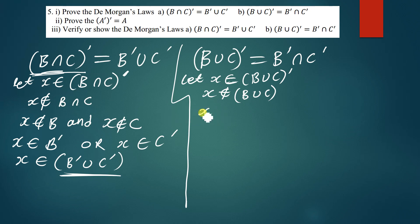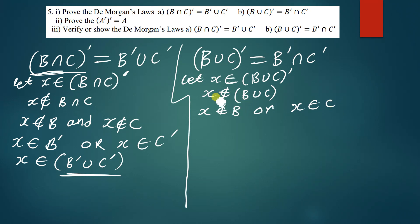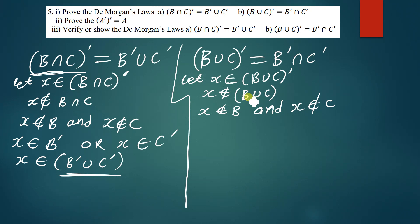If x is not a member of B ∪ C, this implies that x is not a member of B and x cannot be a member of C either. Since the union set is the combination of B and C, if B and C together do not contain x, it means x is neither in B nor in C. So we can use 'and' here: x is not a member of B and x is not a member of C.